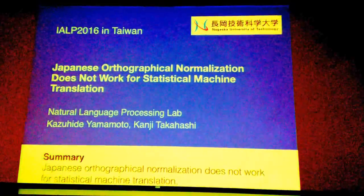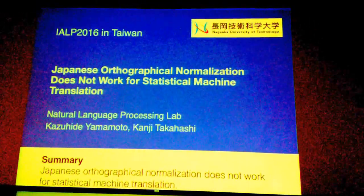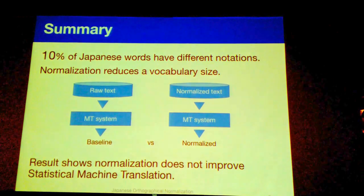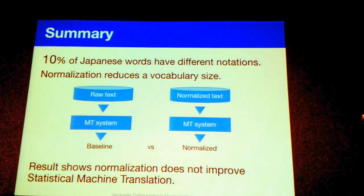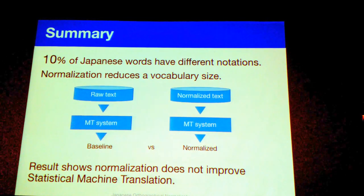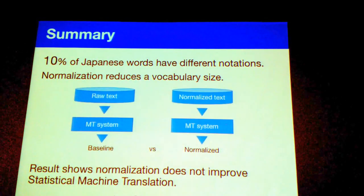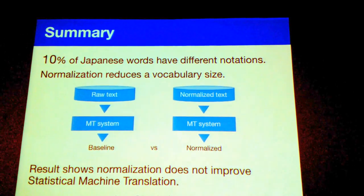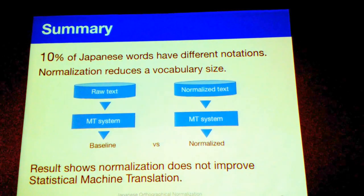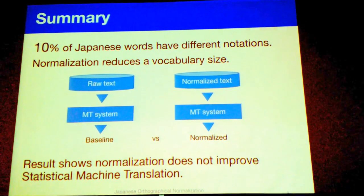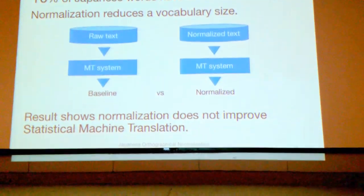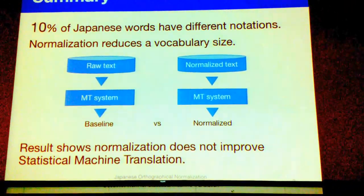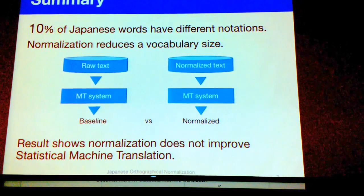To summarize our work: Japanese orthographical normalization does not work for statistical machine translation. 10% of Japanese words have different notations, and normalization reduces vocabulary size. We compared two experiments — one SMT system trained on raw text and another on normalized text. As the result shows, normalization does not improve statistical machine translation quality.